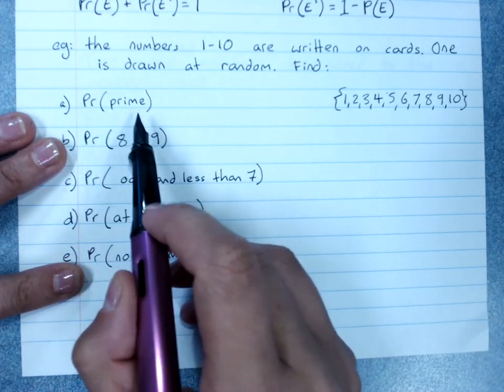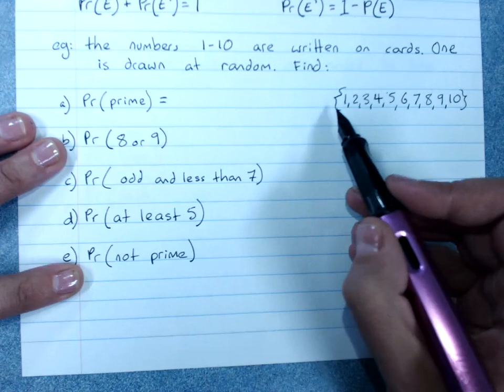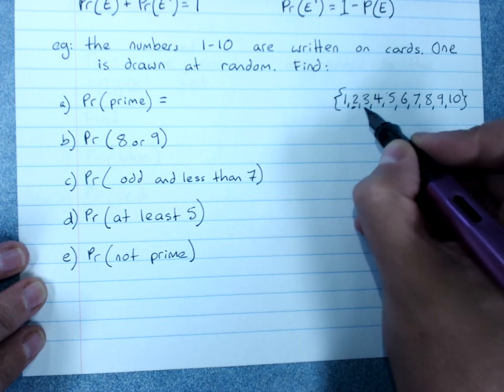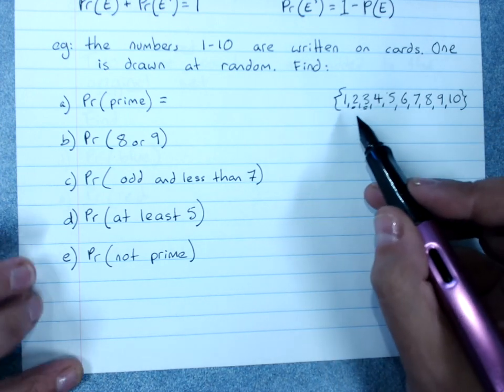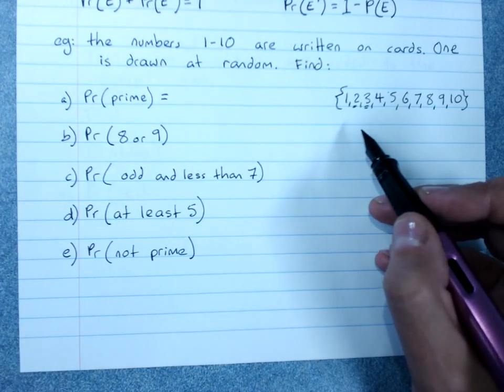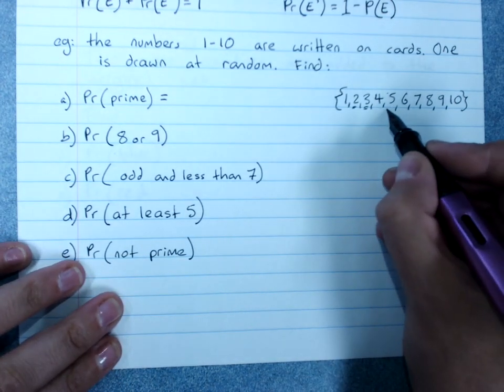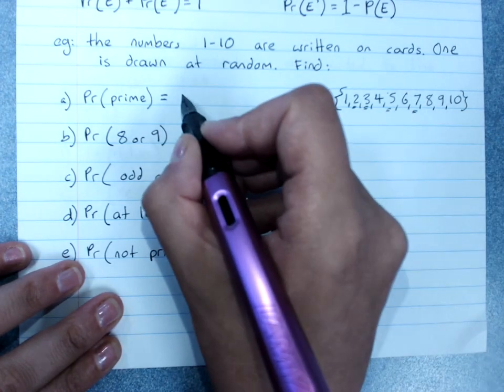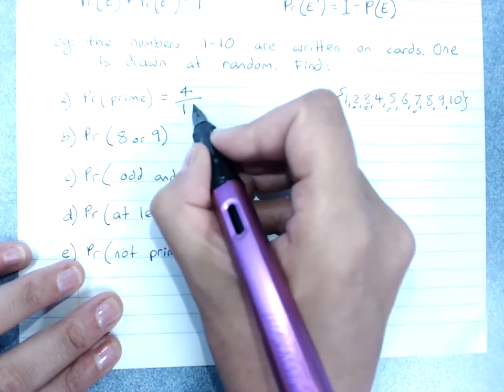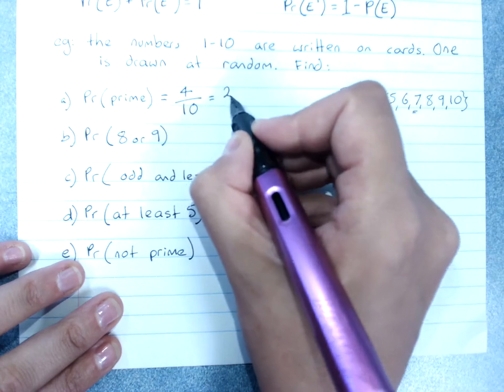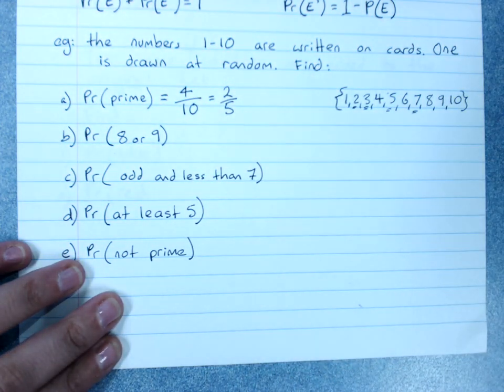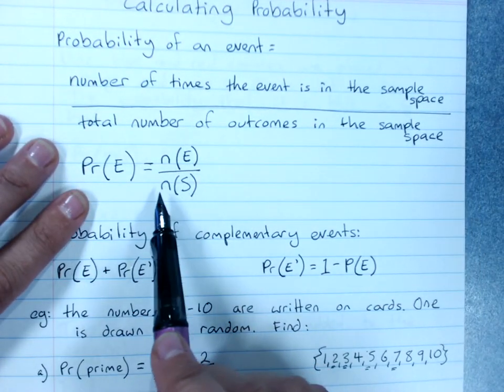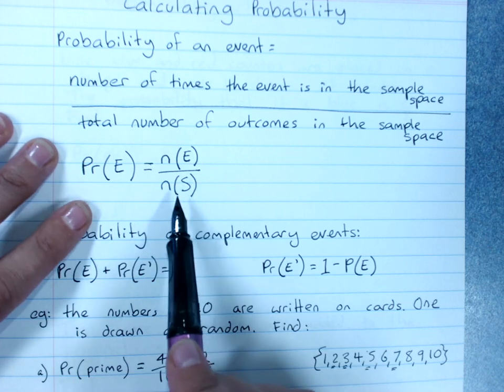What's the probability that I get a prime number? How many prime numbers are there? Now 1 is neither prime nor composite, so 2, 3, not 4. Do we remember the definition of prime only has itself and 1 as a factor, so 2 factors only? 5, but not 6, 7, not 8, not 9, not 10. So there's 1, 2, 3, 4 prime numbers out of 10 total outcomes. So that simplifies to 2 over 5. So I counted the number of times the event happened in the sample space and put it over the number of things in the sample space. That's it.